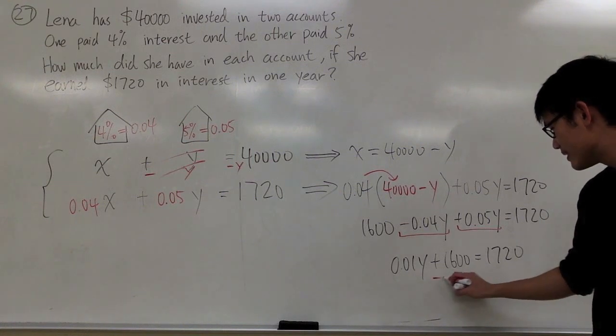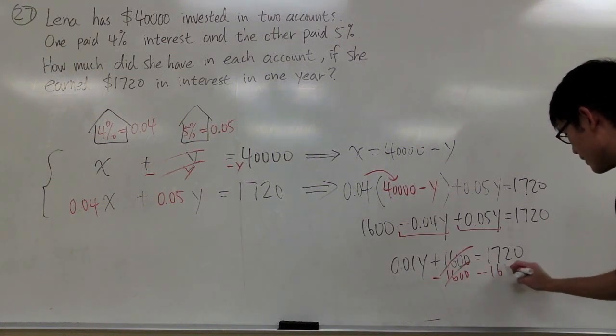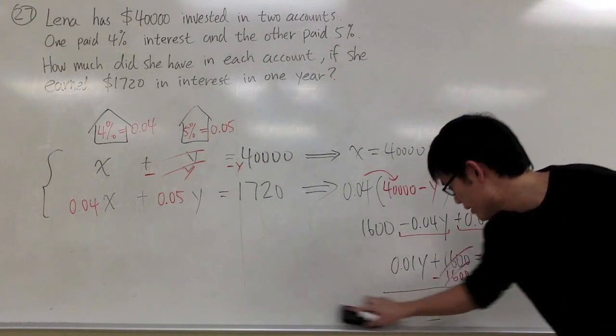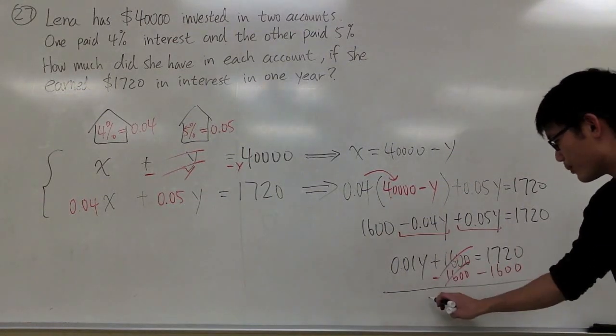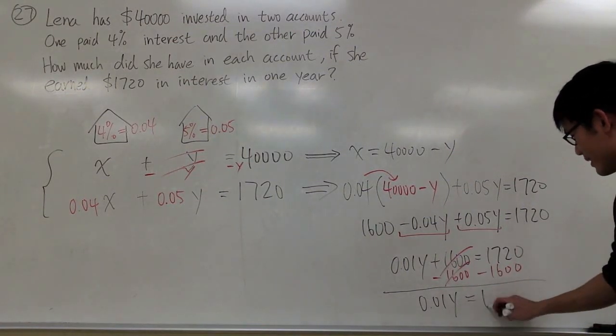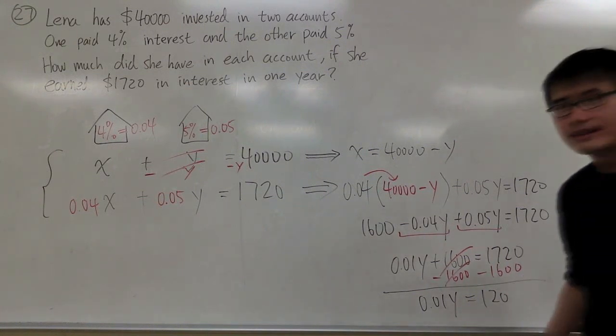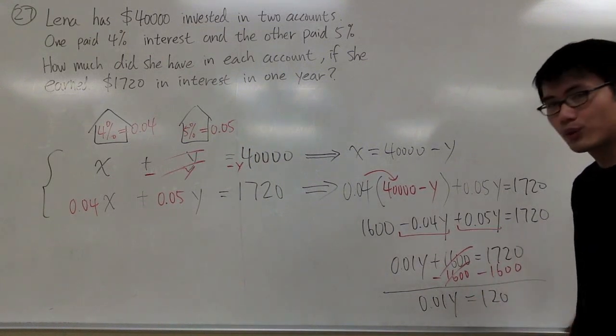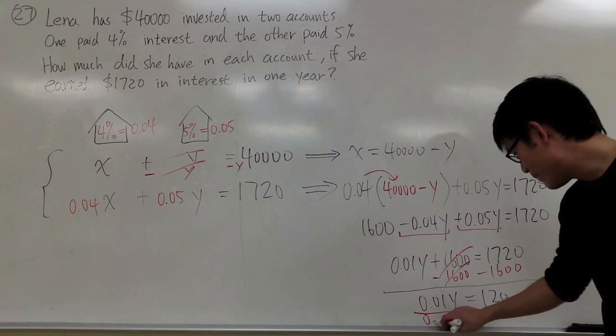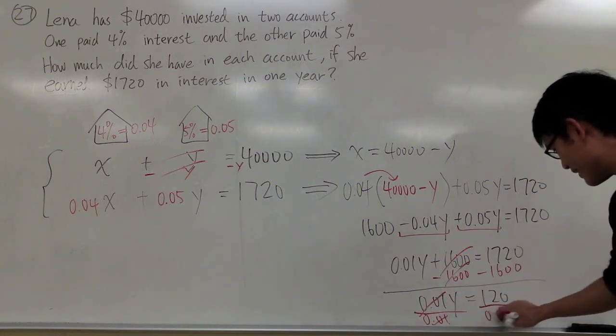And then minus 1600 on both sides, cancel this out, we get 0.01y is equal to 120. And let me see if I can do this, divide both sides by 0.01, cancel this out, divide this by 0.01.